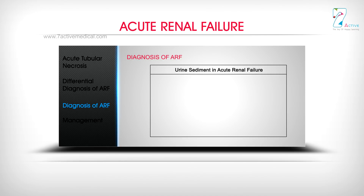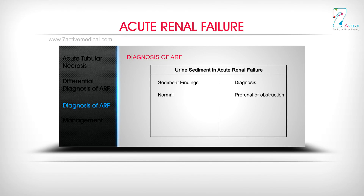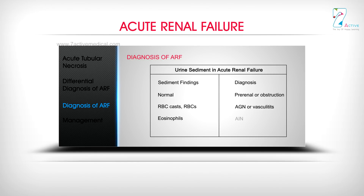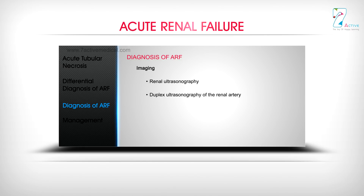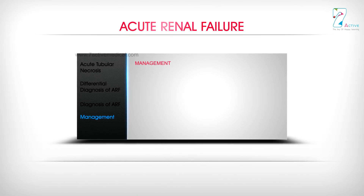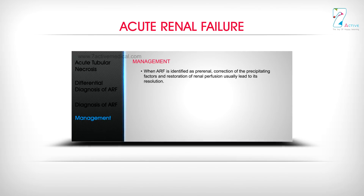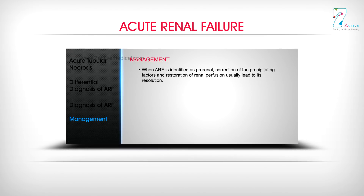Urine sediment findings in acute renal failure: Normal sediment suggests pre-renal or obstruction; RBC casts and RBCs suggest AGN or vasculitis; eosinophils suggest AIN; pigmented granular casts suggest ATN. Imaging modalities include renal ultrasonography, duplex ultrasonography of the renal artery, abdominal plain radiograph, and radionuclide renal scan.